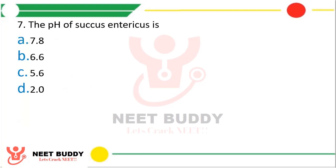Question number 7. The pH of succus entericus is: option A. 7.8, option B. 6.6, option C. 5.6, or option D. 2.0. The correct answer is option A, 7.8. The pH of succus entericus is slightly alkaline.